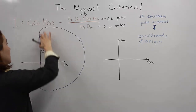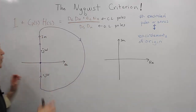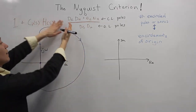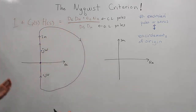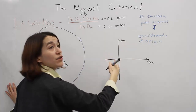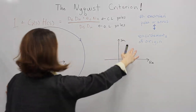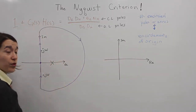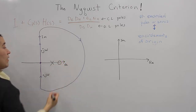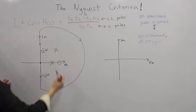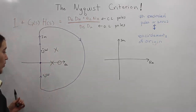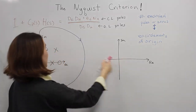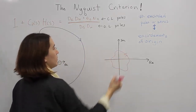Looking at these two regions, we can now map our contour. We define our contour and take it and put it into our function. From there, we will get some sort of mapping that encircles the origin some number of times, depending on the number of poles or zeros in our system. For example, if we have three poles, our system output is going to encircle the origin in the clockwise direction.